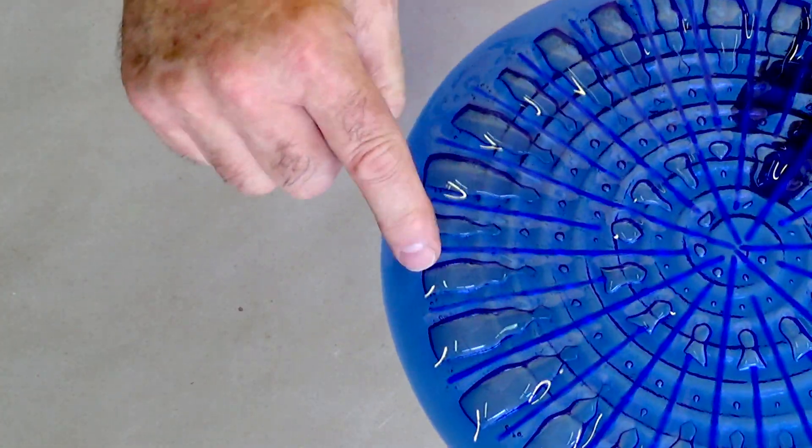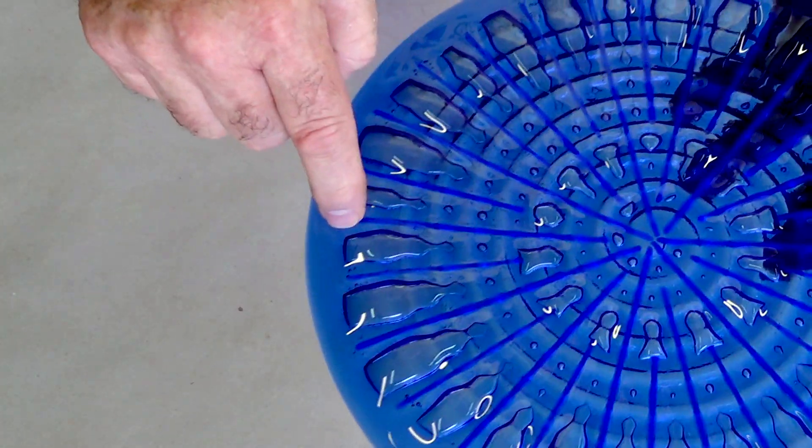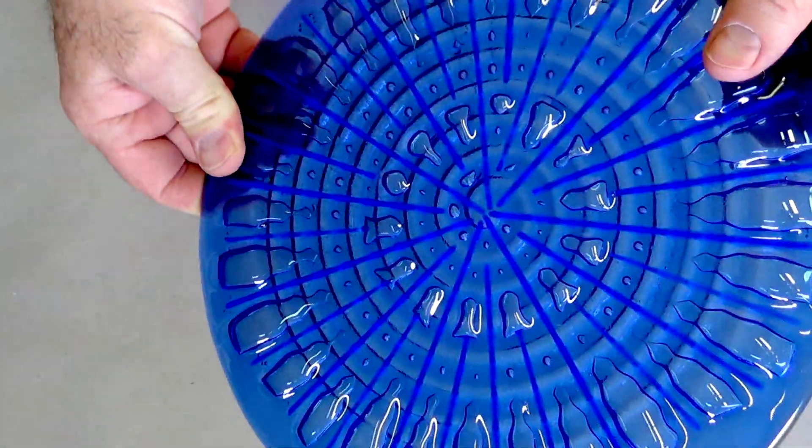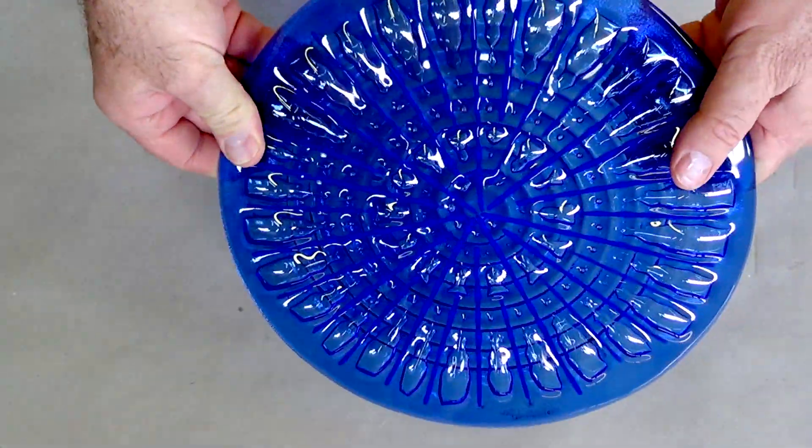The point where the lines start and stop will affect the size of the bubbles. The closer the endpoints are to the edge and the center, the smaller the bubbles.